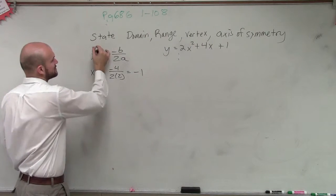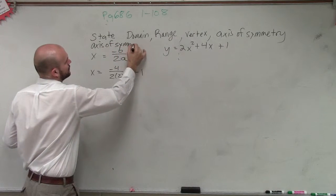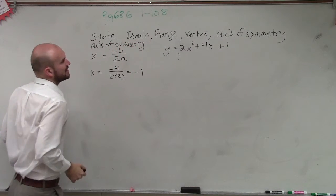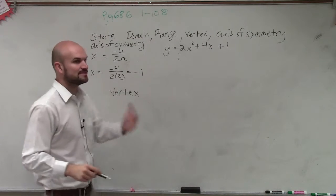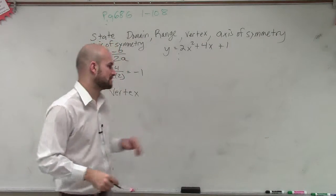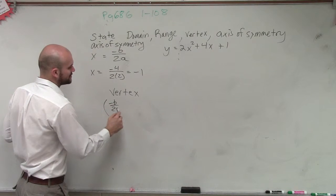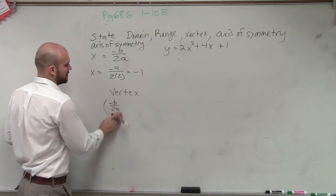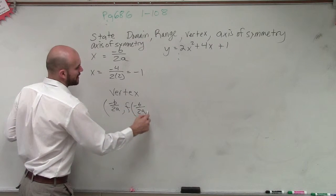Then if I want to find the vertex, remember that the axis of symmetry goes through the vertex. So therefore, the vertex takes in the point of opposite of b divided by 2a, then comma f of opposite of b divided by 2a.